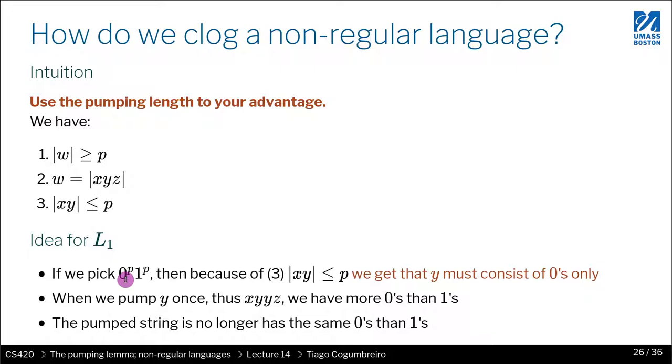And why do we do that? Well, the reason we will do that is because if you think about it, XY, so the part that includes the loop—loop is the Y part—is going to be always smaller equal than P, which means that if we fix our string to have at least P zeros, that means that the XY portion will constitute of only zeros. And that is really good for us because when we pump Y a number of times, Z will remain intact, which means that Z will have some zeros, and a fixed number of ones—P ones.